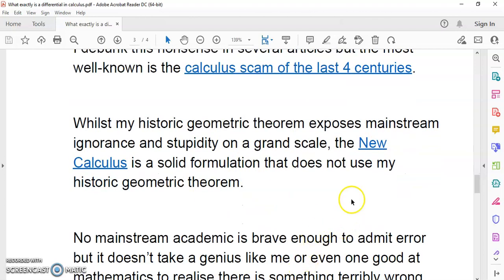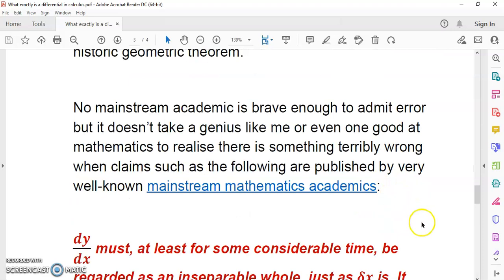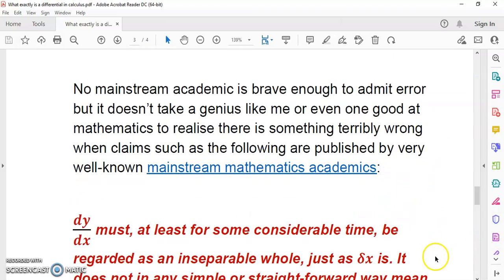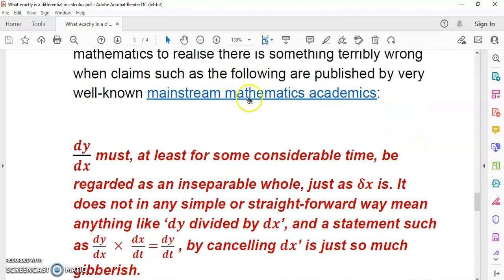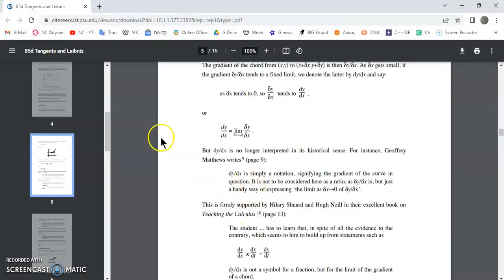No mainstream academic is brave enough to admit error, because they're just cowards. And it doesn't take a genius like me, or even one good at mathematics, to realize that there's something terribly wrong when claims such as the following are made in mainstream mathematics by well-known mainstream mathematics academics.